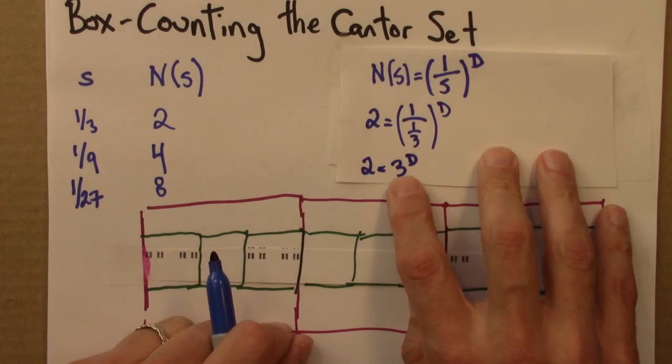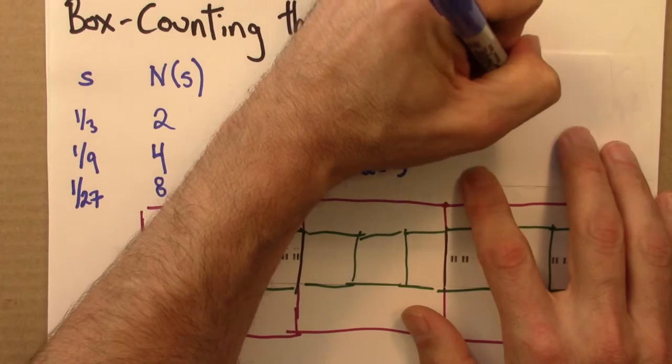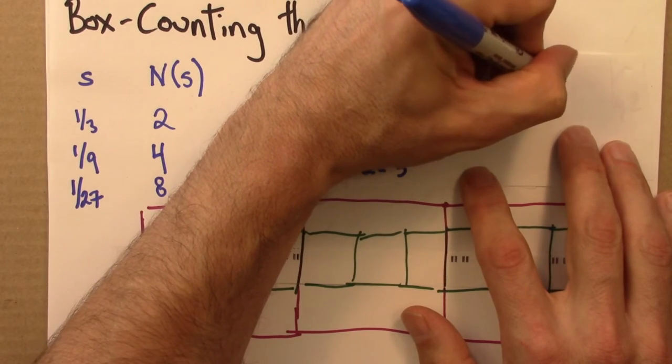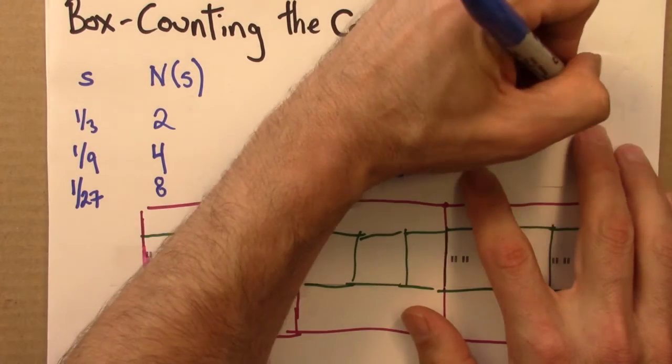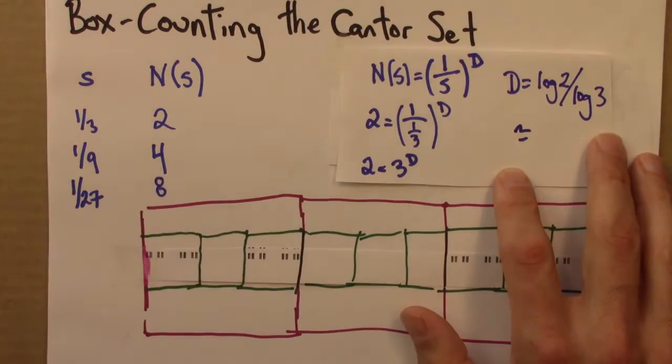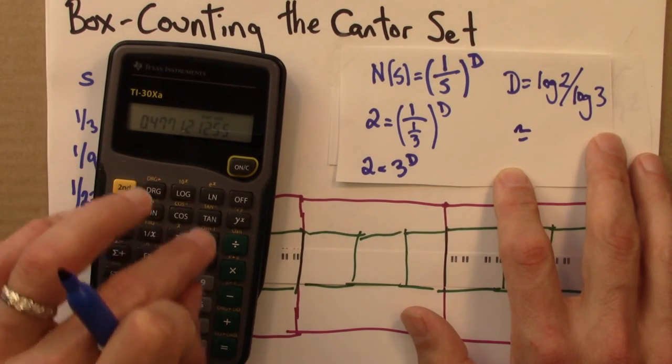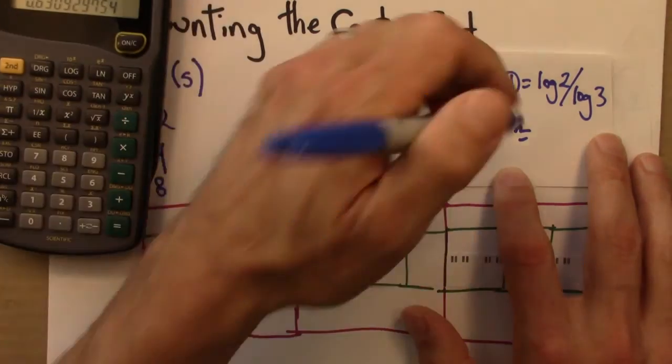And this equation, we've worked with it before, if we take the log of both sides and solve for D, we get D is log two over log three. And let's see what that is. Two log divided by three log is approximately 0.63.